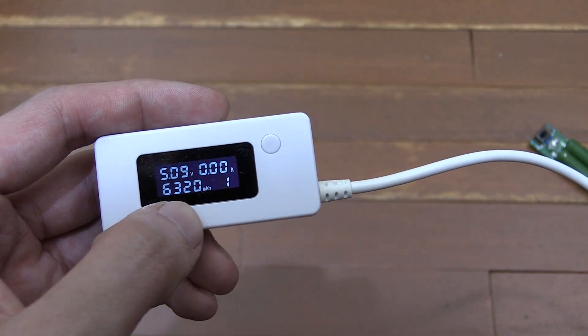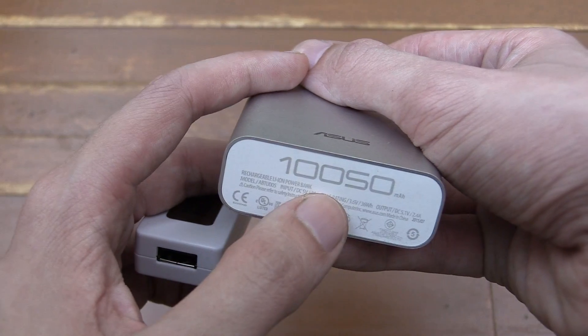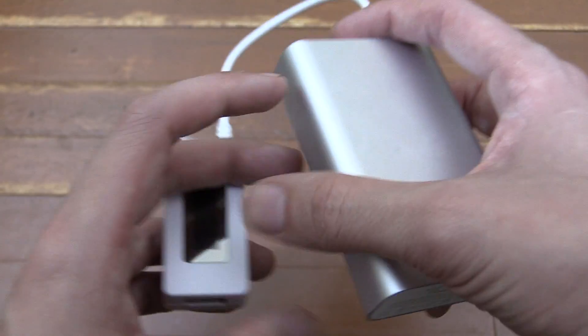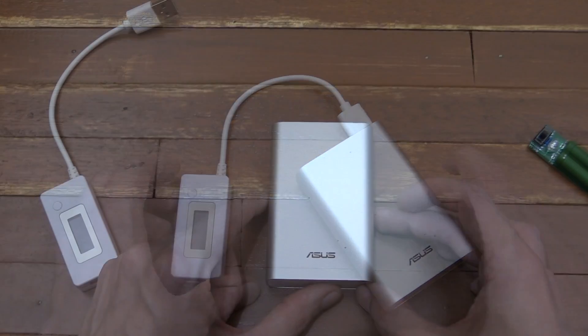Now I know what you might be thinking. 6,320 milliamp hour is nowhere near 10,050.